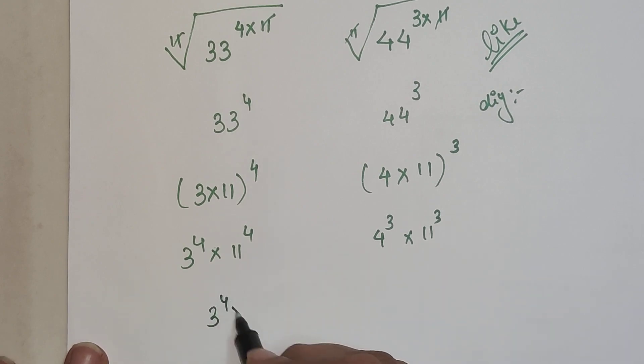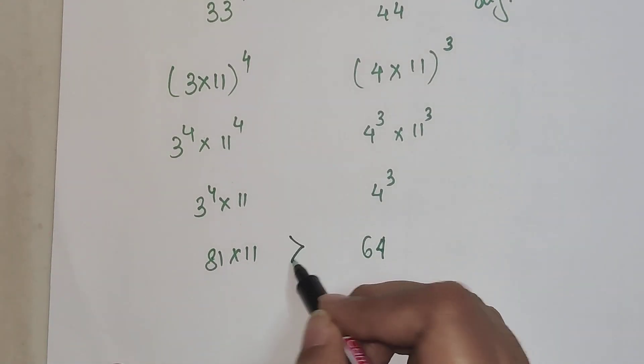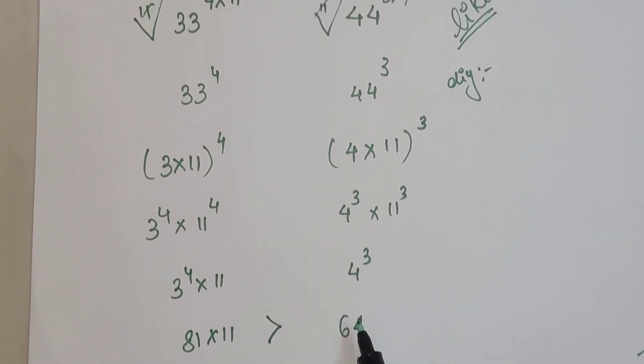We are left with 3 raised to 4 times 11 and 4 cubed. This is 81 times 11, and this is 64. Obviously, we can say that 33 raised to 44 is greater than 44 raised to 33.